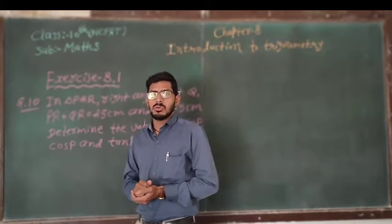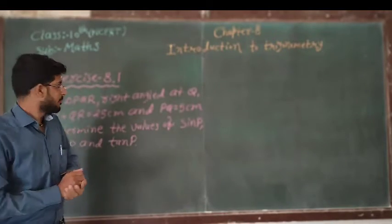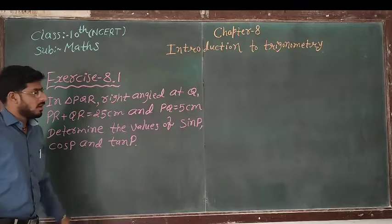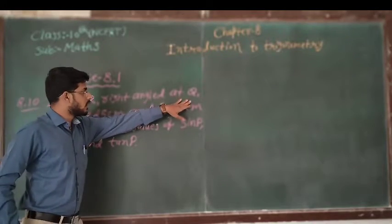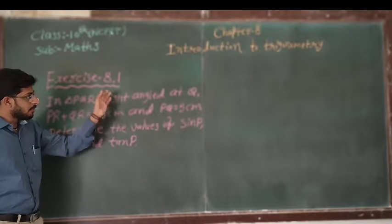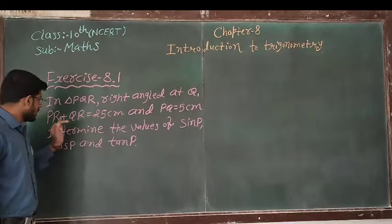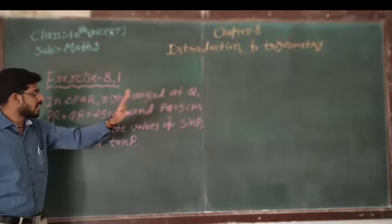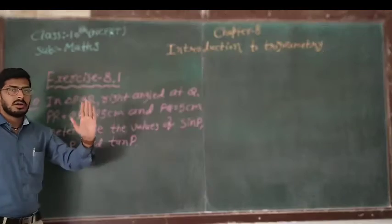Today we are going to start question number 10. In triangle PQR, right angle at Q, PR plus QR equal to 25 centimeter and PQ equal to 5 centimeter. Determine the values of sin P, cos P and tan P.